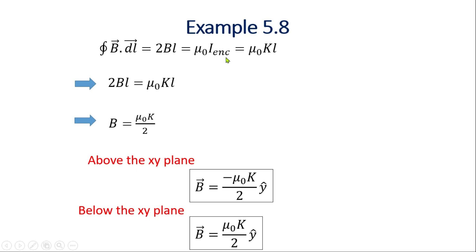I_enclosed = Kl نکال چکے ہیں۔ Ampere's law میں put کرتے ہیں: 2Bl = μ₀ I_enclosed = μ₀ Kl۔ l cancel out ہو جاتا ہے، so we get B = μ₀K/2 above the XY plane along negative y-direction, and below the XY plane along positive y-direction۔